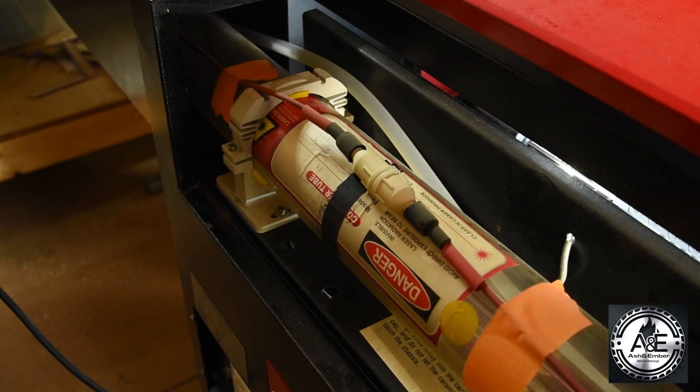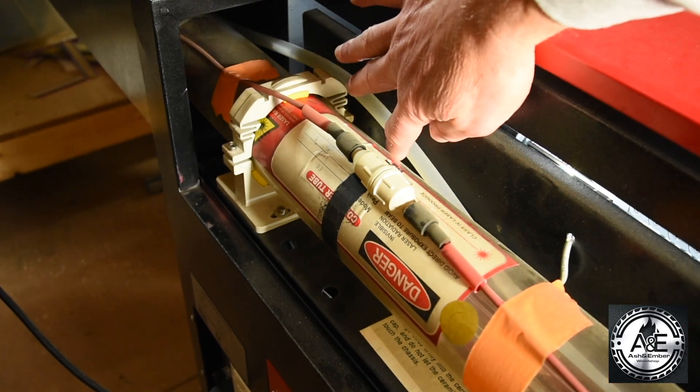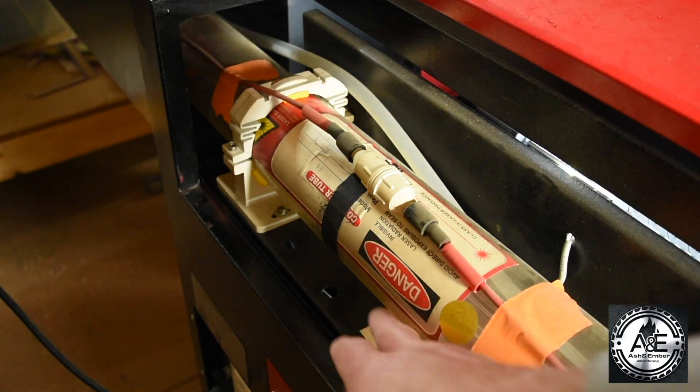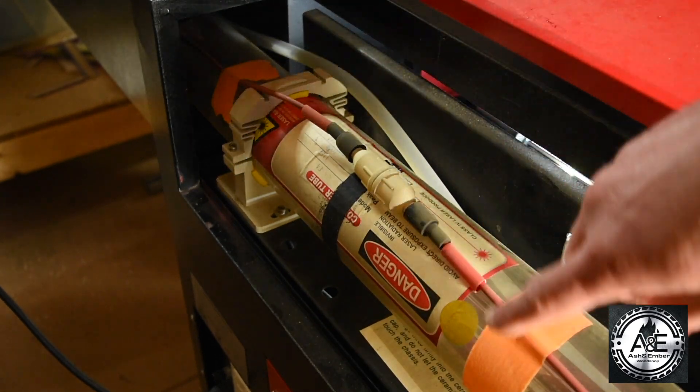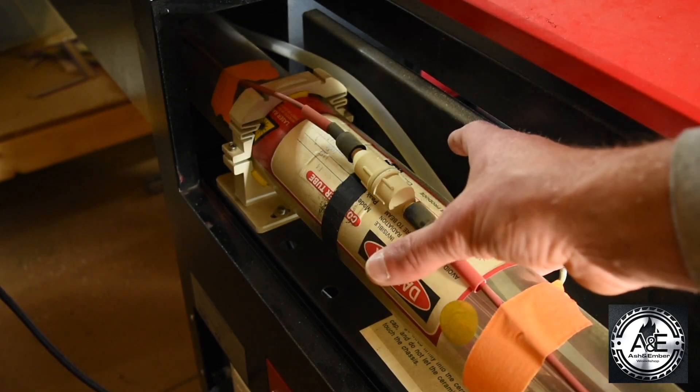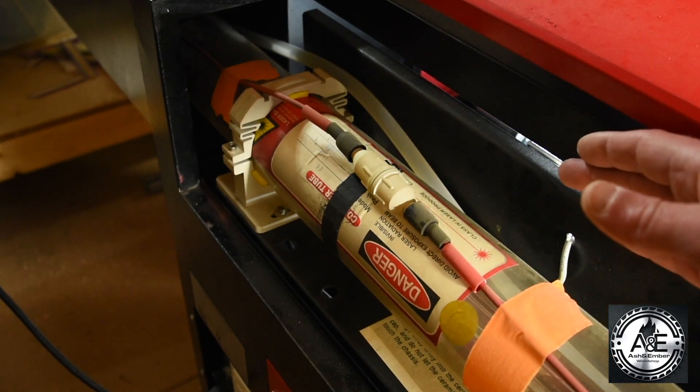Also, when you are installing your laser tube, make sure that your water lines aren't running underneath the tube here, that they're coming along the top. Your wires are along the top. Nothing's getting jammed or pinched in between your laser tube and the housing.